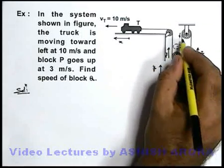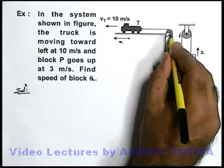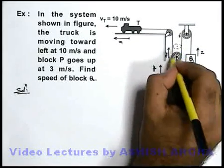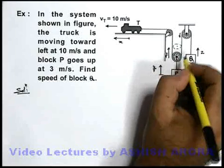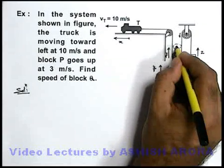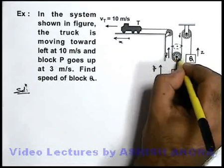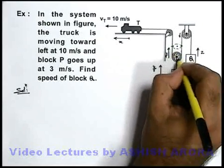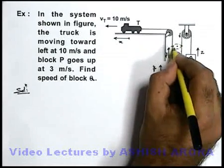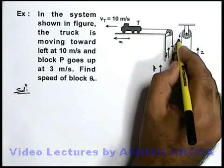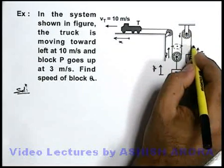So the total length of string which is available over this part will be z plus 2y, because due to the displacement of this pulley by a distance y, on both sides of this pulley, y plus y, 2y length of the string will get loose. And z is provided by this part due to the motion of Q in upward direction.